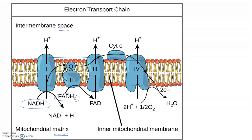From our tally we have a total of 10 NADH and 2 FADH2. Each of these molecules is going to enter the electron transport chain and drop off the electrons they're carrying. Remember, these electrons originated in the bonds of glucose — these are carriers that accepted electrons as glucose was slowly oxidized. Now NADH will drop off electrons into the electron transport chain.